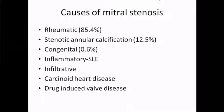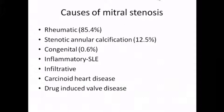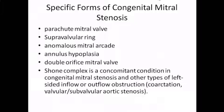There are multiple causes of mitral stenosis. The most common cause is rheumatic, and the second most common is mitral annular calcification. Other rare causes include congenital disease, inflammatory conditions such as SLE, infiltrative diseases, carcinoid heart disease, and drug-induced valvular disease. Rare obstructive causes include myxoma and thrombus. Specific congenital forms include parachute mitral valve, supravalvular ring, anomalous mitral arcade, annulus hypoplasia, double orifice mitral valve, and Shone complex, which consists of LVOT obstruction with congenital mitral stenosis.